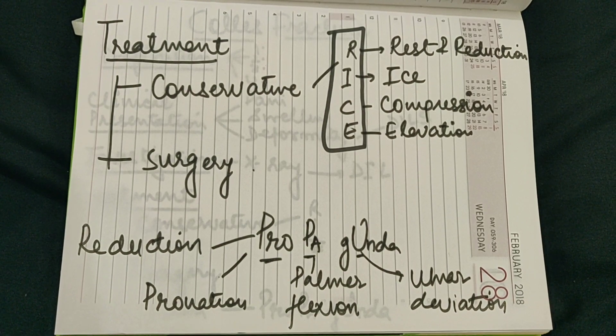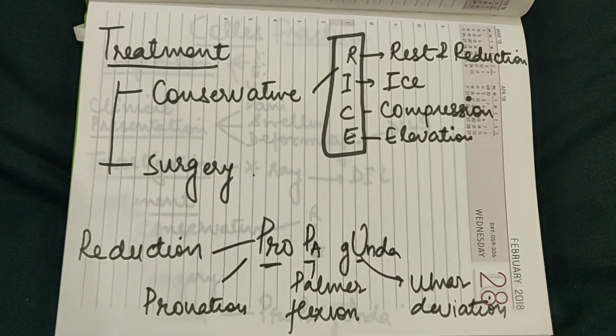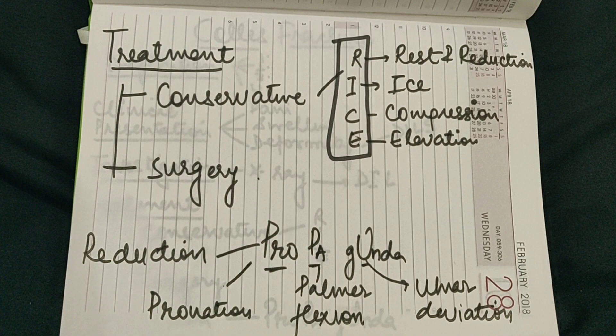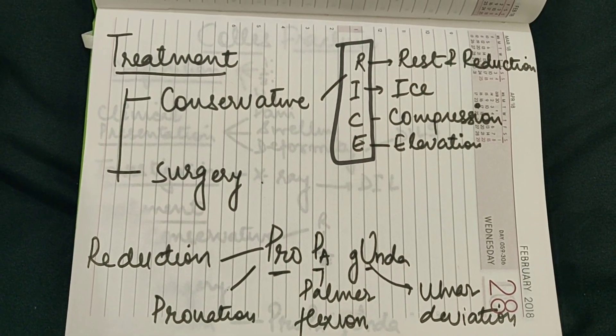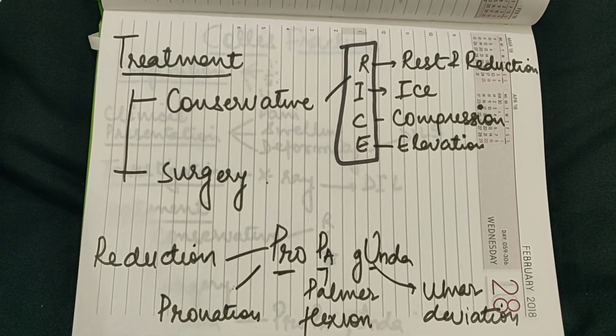In the RICE mnemonic: R stands for rest and reduction, I for ice fermentation, C for compression, and E for elevation of the part.